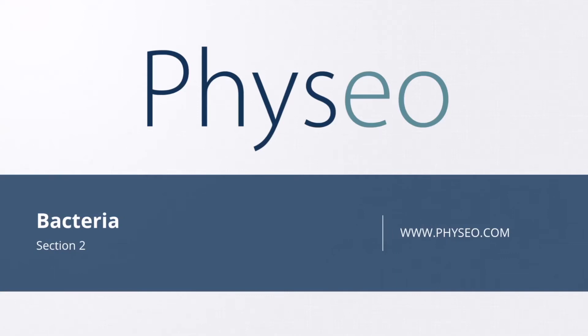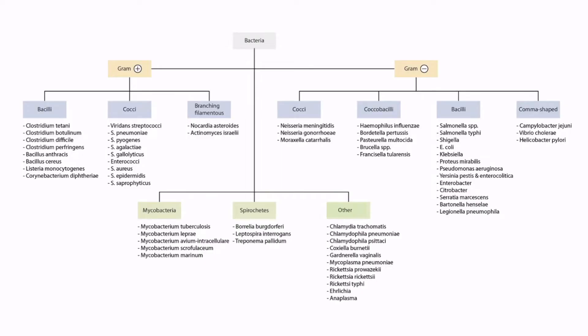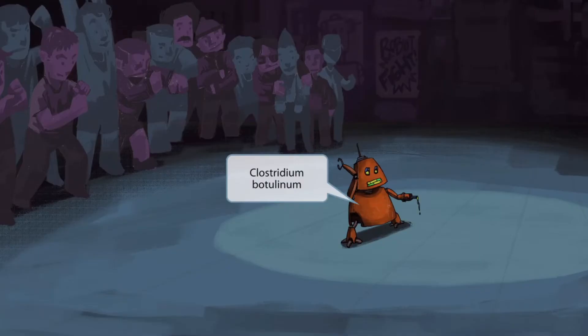Welcome to section 2 of Bacteria. This is our Bacteria overview figure. In this video, we'll be discussing Clostridium botulinum, which you can see right here. This scene takes place in a secret underground robot fighting arena. The fight is a highly anticipated event, as you can probably tell from the large crowd off to the side watching in suspense. The orange robot is the defending champion of the world, so his title is on the line.